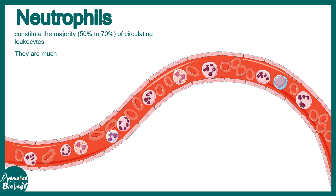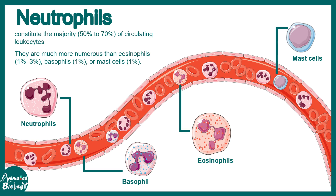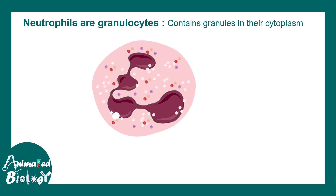Neutrophils are much more abundant compared to other blood cells like basophils or eosinophils. Neutrophils carry out their functions via specific granules present in their cytoplasm. There are different types of granules present in the cytoplasm of neutrophils, and this heterogeneity of granules has greater biological significance which we will unravel in this video.